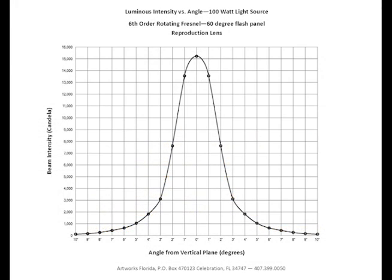The data is then inputted into a graph. The vertical lines demonstrate the angle of the beam in relation to the meter. The horizontal lines are the intensity of the beam ranging from 0 to 16,000 candela. The center of the graph at 0 degrees shows the peak intensity of 15,244 candela and how the intensity drops off as the flash panel rotates away from the meter.